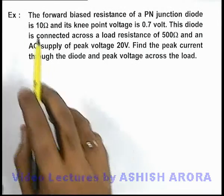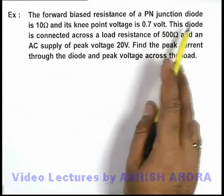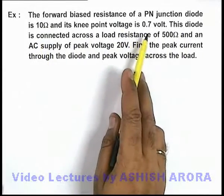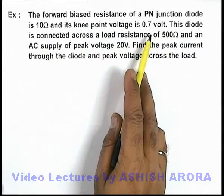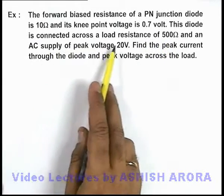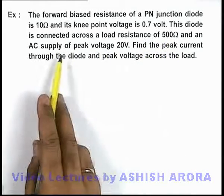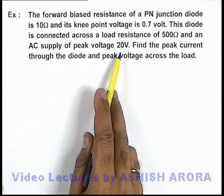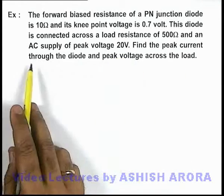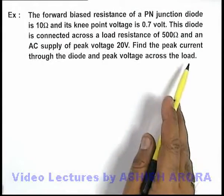In this example, we are given that the forward bias resistance of a p-n junction diode is 10 ohms and its knee point voltage is 0.7 volt. This diode is connected across a load resistance of 500 ohms and an AC supply of peak voltage 20 volts. We are required to find the peak current through the diode and peak voltage across the load.